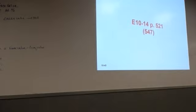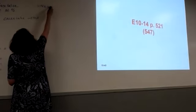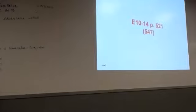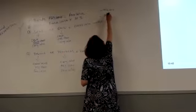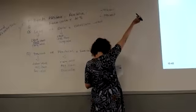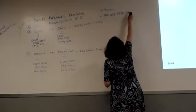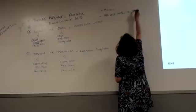The first thing we want to know is what is the face value. So the face value is $140,000. The next thing we want to know is the cash amount. The cash amount is equal to the face value times the at percentage. The face value is $140,000 and the at percentage is 101%, so that comes to $141,400.